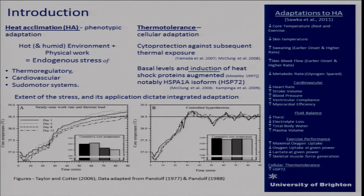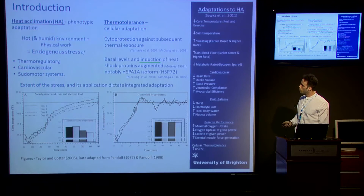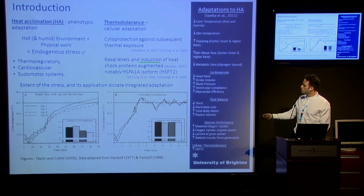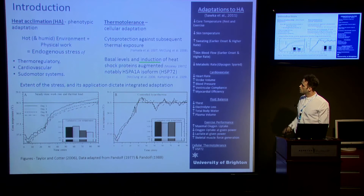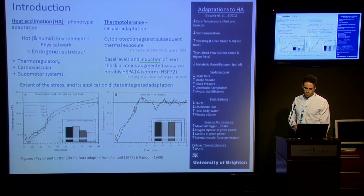This is a figure from a 2006 review by Taylor and Cotter. On the left, figure A shows various days — day 1, 4, 8, and 12 — with core temperature on the y-axis decreasing as acclimation occurs. Contrasting this with figure B, we see the controlled hyperthermia model sustaining core temperature.